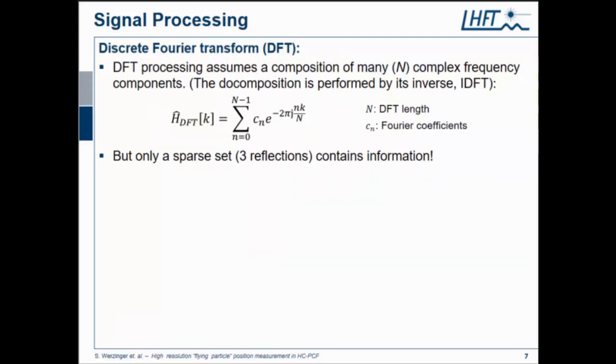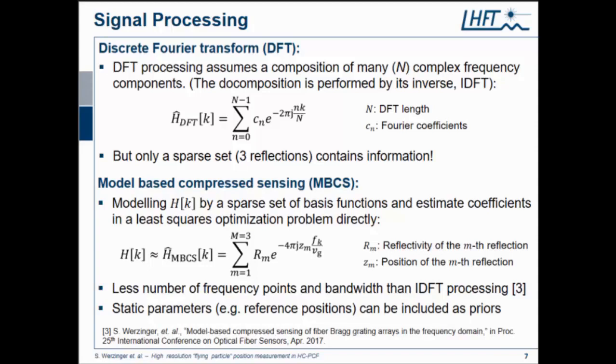For signal processing, you could use a Fourier transform, that's working totally fine. But there are some things we could do even more efficiently, because the Fourier transform assumes a composition of many complex frequency components of our frequency response. But if you look at what we have in our setup, we have just two or three reflections. If we just describe this with just three complex frequency components, it's actually a sparse set which contains all the information already. This leads us to the idea of model-based compressed sensing, which is a very well-known technique from electrical radar processing.